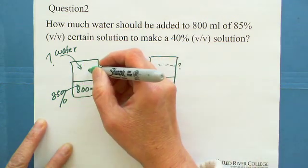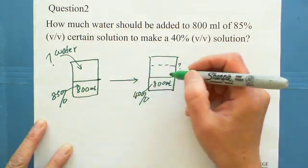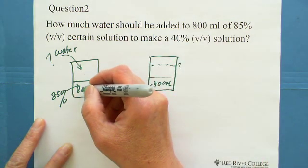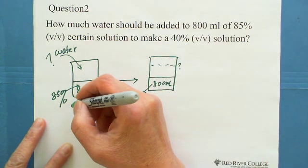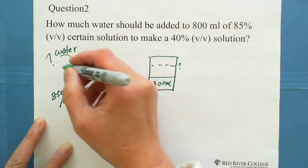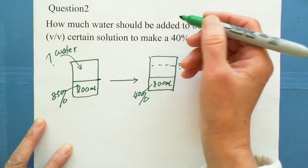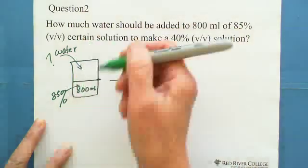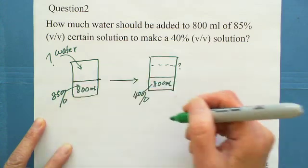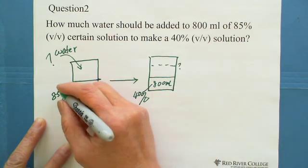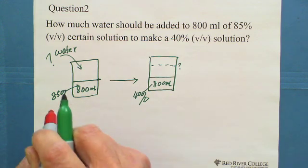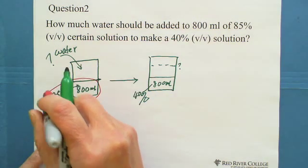But the solute doesn't change. The solution is 85% 800. In this one, the solute doesn't change. You don't add any solute, you just add water. So the solute doesn't change. Let's find what is the solute. In this part, using these two information, you find what is the solute.